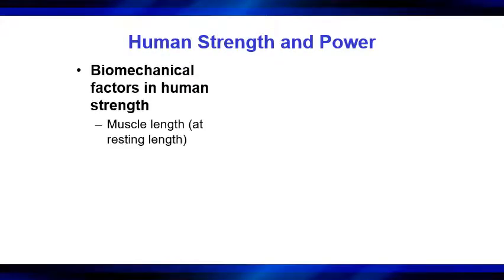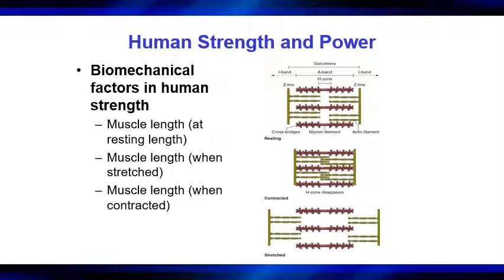Another factor related to strength and power is muscle length, which relates to the sliding filament theory. When a muscle is at its resting length, the actin and myosin filaments are next to each other, providing a maximal number of potential cross bridges. The muscle can generate its greatest force when starting at resting length — that's where you have the greatest potential for cross bridges.